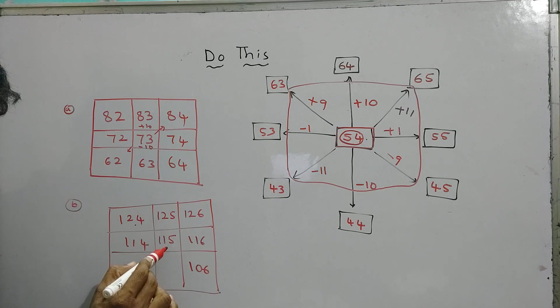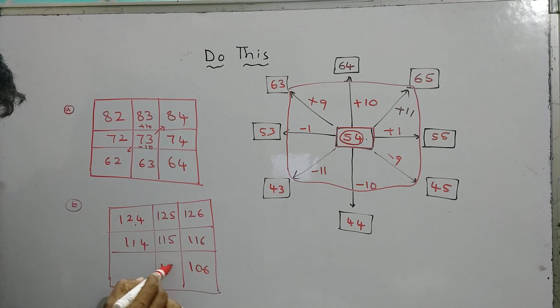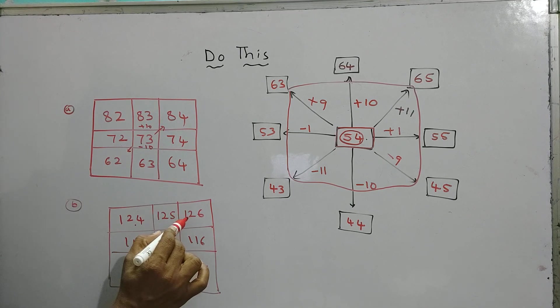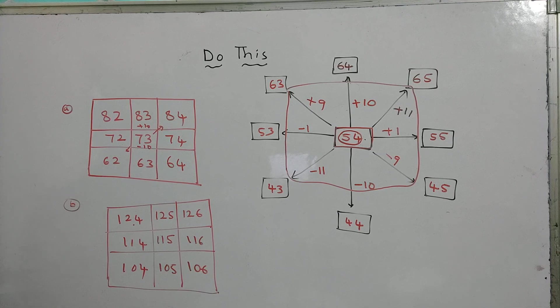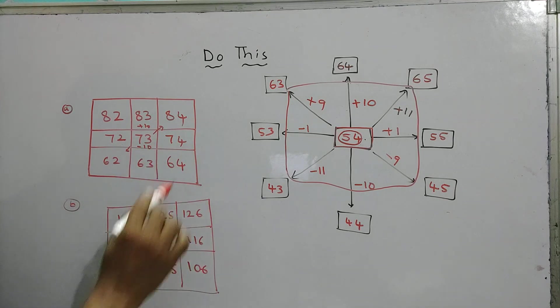115 plus 10 is 125. Minus 10 is 105. 115 plus 11 is 126. 115 minus 11 is 104. Like this I filled, I tried, I filled two boxes here.